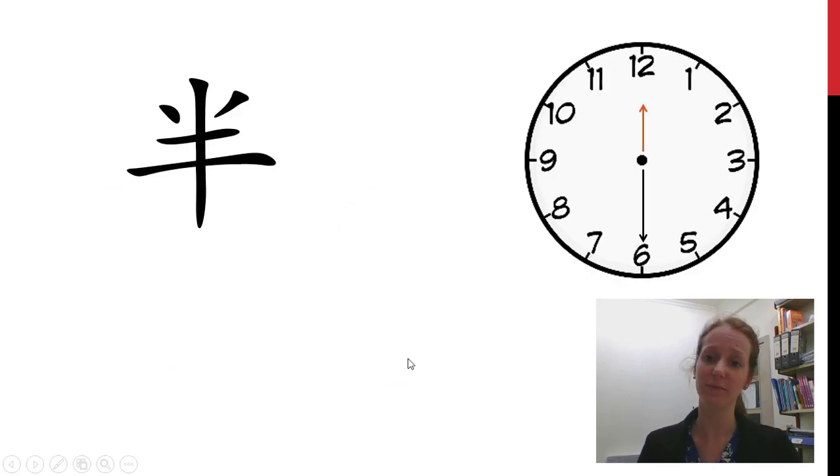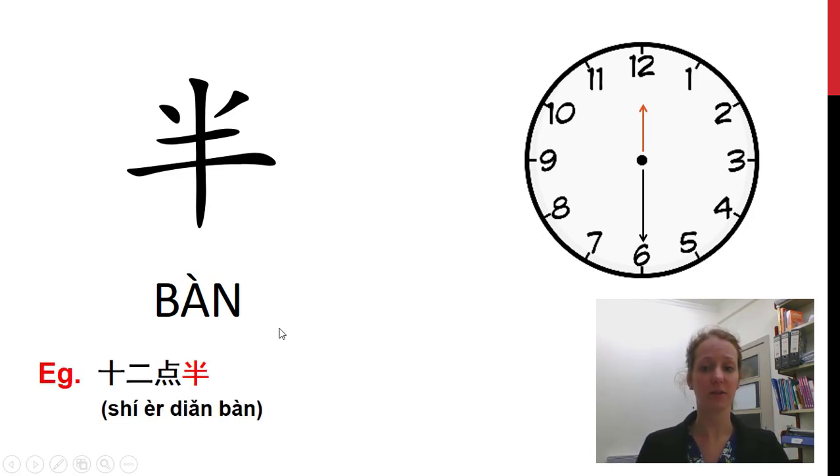這是什麼? Give you a clue. 這是半. You might notice that this character looks like something that's been cut in half, straight down the middle. So that is the meaning of this, half. So the time is 十二點半. Half past twelve.